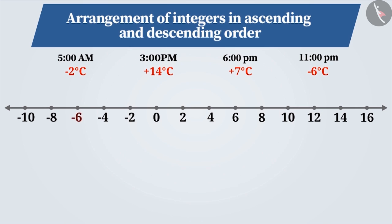As you can see, minus 6 is on the extreme left, so it is the smallest number among the given numbers. Then let's move to the right. Now comes minus 2 which is to the right of minus 6, therefore it is larger. But, it is to the left of plus 7 and plus 14 and hence it is smaller to them.